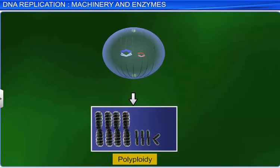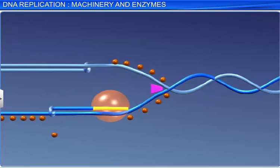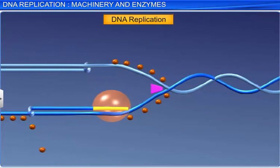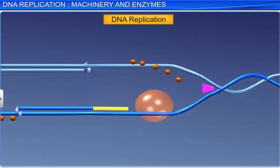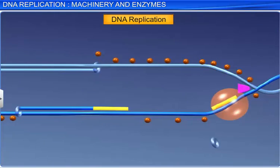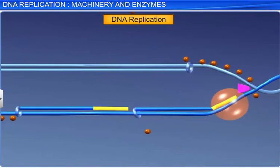Therefore, the process of DNA replication, which is the basis of biological inheritance, is conducted with accuracy with the help of various enzymes in a determined manner.